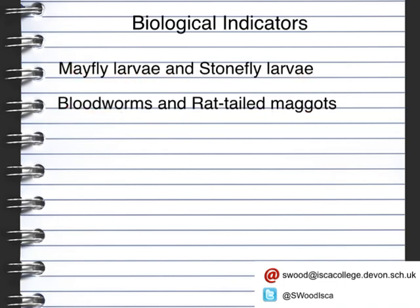So we can look for numbers of these organisms to say whether water is polluted — finding high levels of bloodworms and rat-tail maggots indicates pollution. Having a high biodiversity can give an indication of whether the water is polluted or not. High biodiversity would mean it is not polluted, whereas a low biodiversity restricts the amount of organisms you have, so you get more of the organisms that are tolerant to pollution.